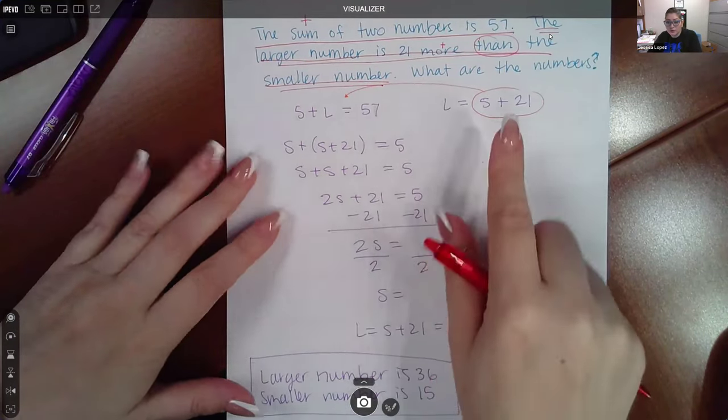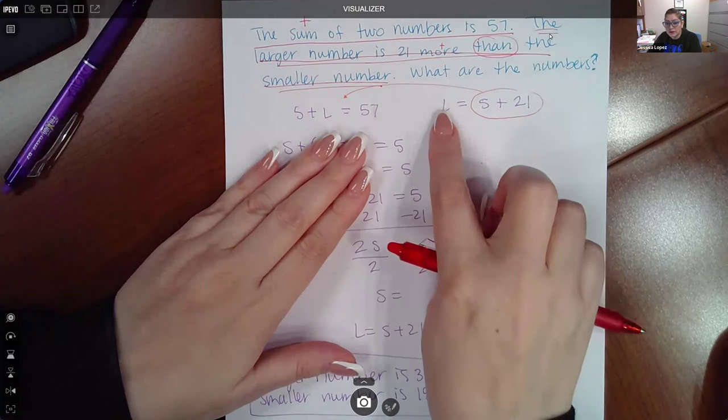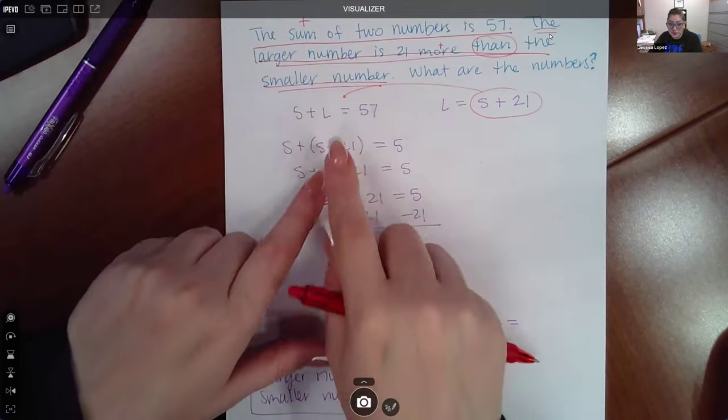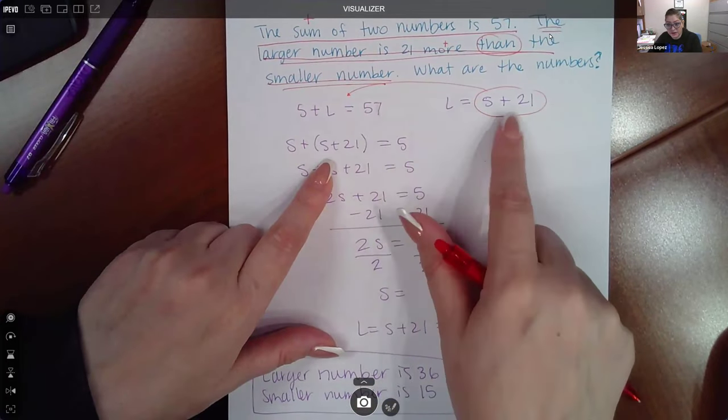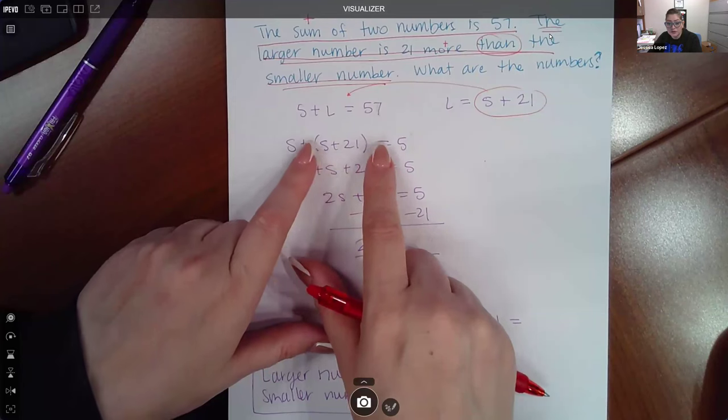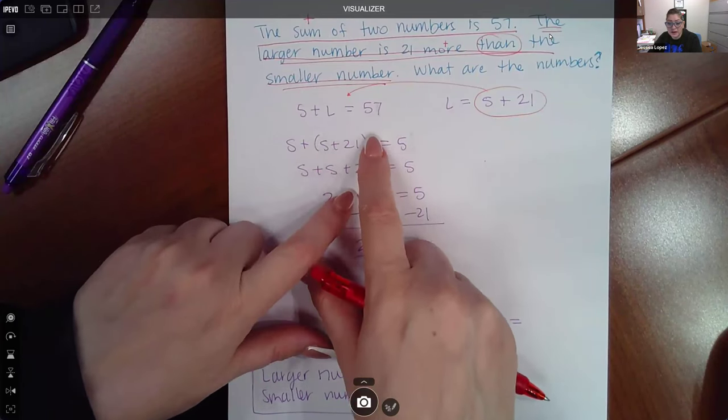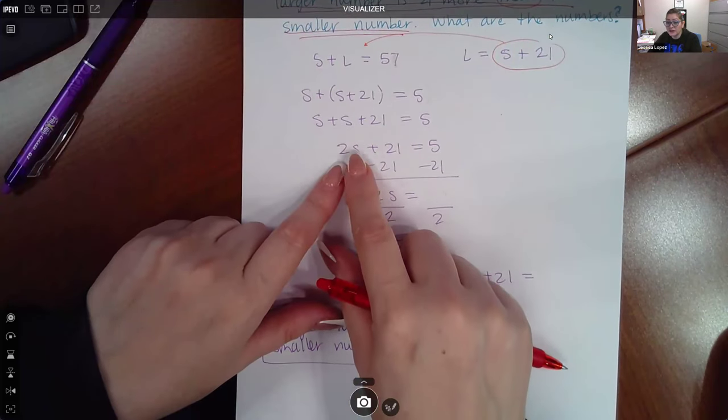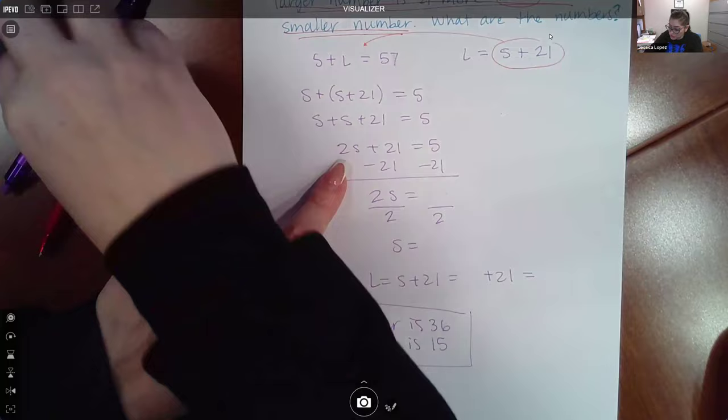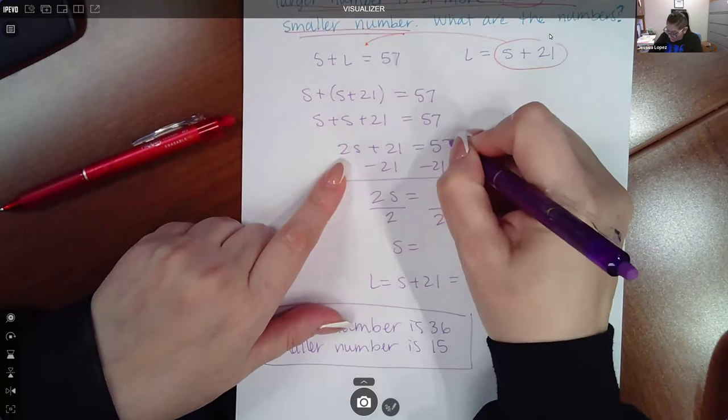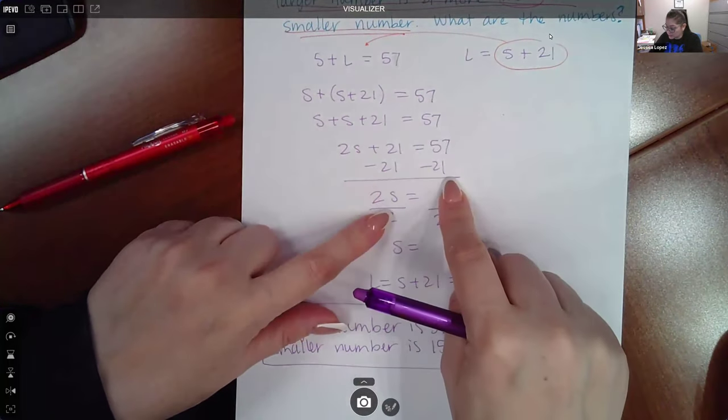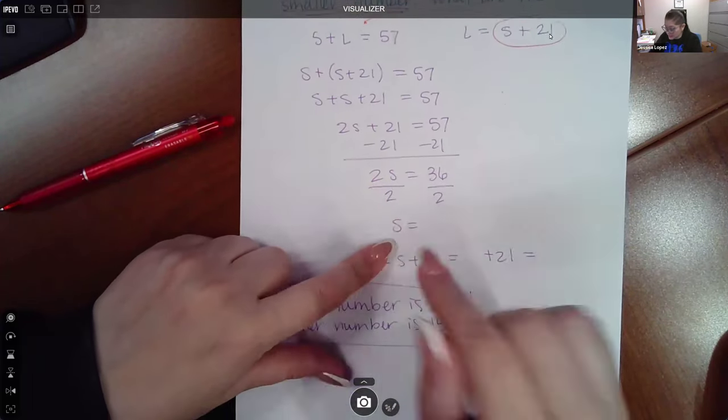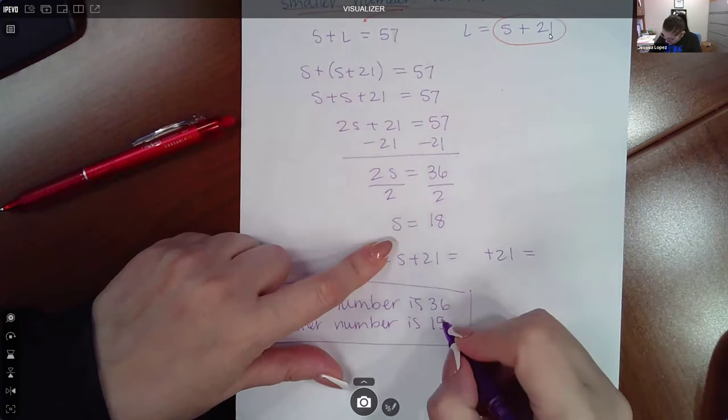Now we have our two equations. Since one letter is already isolated, I resort to substitution. So I replaced the L with its equivalency, S plus 21. There's no coefficient to distribute, no exponent to apply, so we do not need those parentheses. I combine my like terms and then resume with trying to solve for S. So I minus 21 on both sides, which gives me 36. And then if I divide by 2 to isolate the S, I'm going to get that S is equal to 18.